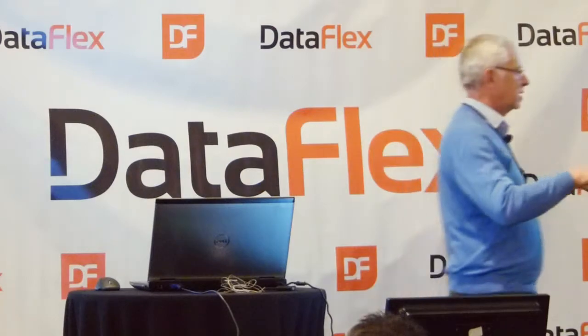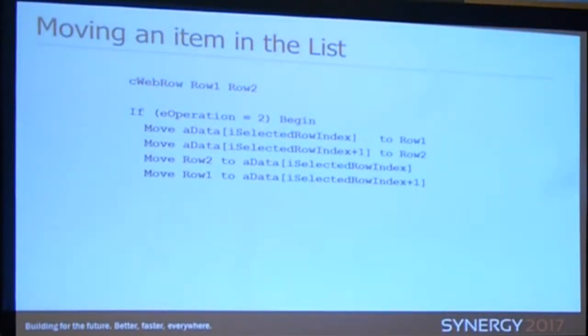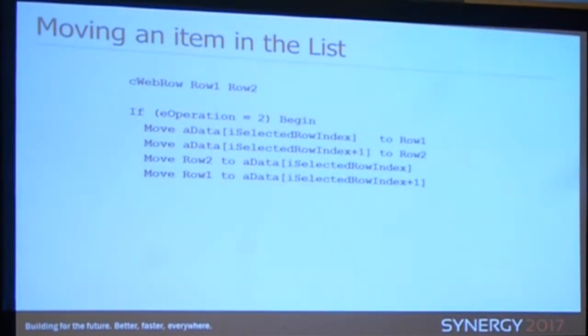Moving an item in the list — as you saw before, I could move John up and down. We do something slightly different here. If we're moving down, we actually have two items to operate on: the one being moved down, and the one underneath it that is going to take its place. So we're just swapping those two lines. The selected row index tells us which row will be moved, and selected row index plus one is the one that should be swapped with it.